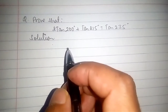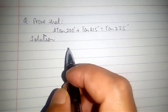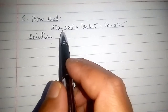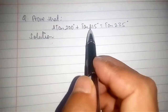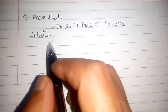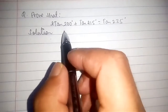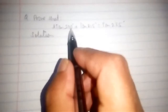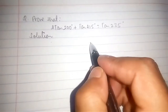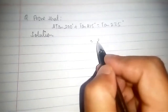Today I am going to solve an equation related to trigonometry. The equation is: tan(200°) + tan(215°) equals tan(235°). We need to prove this. See which angle has coefficient 2 — that should be written on the right-hand side.